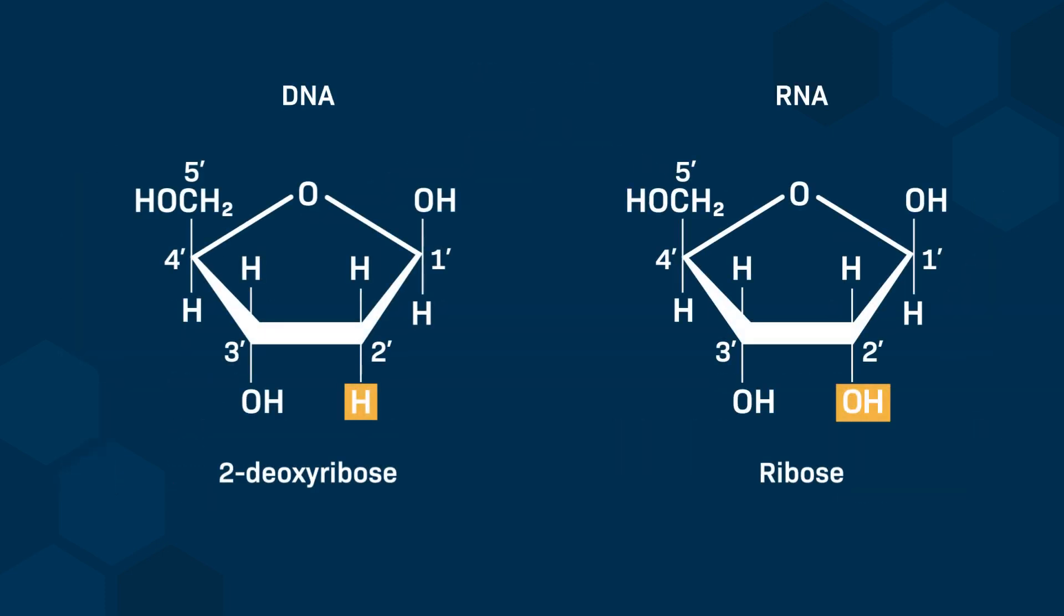Let's focus on the pentoses found in DNA and RNA. The carbon-2' of deoxyribose contains hydrogen, which confers low chemical reactivity but very high stability. This is important, since DNA carries genetic information that is transmitted across generations.